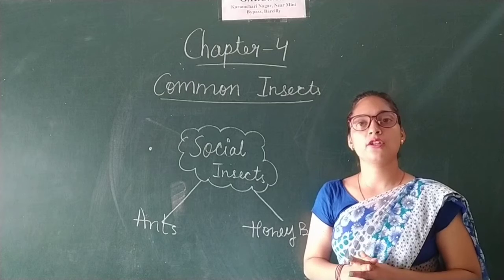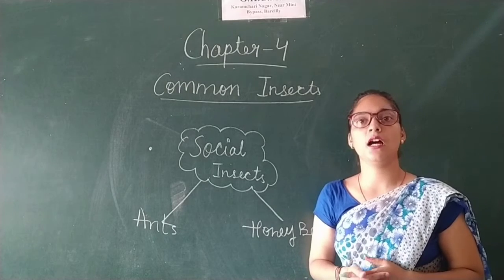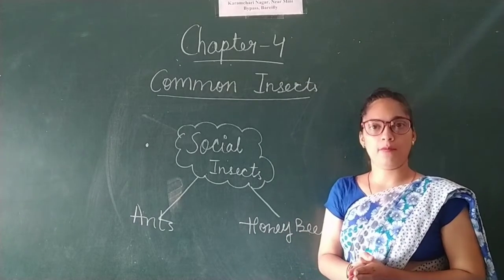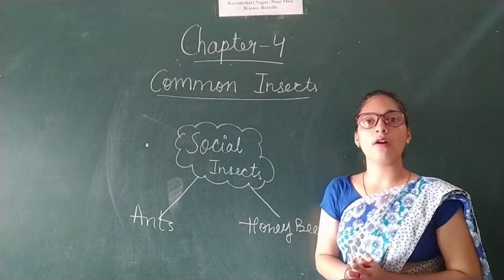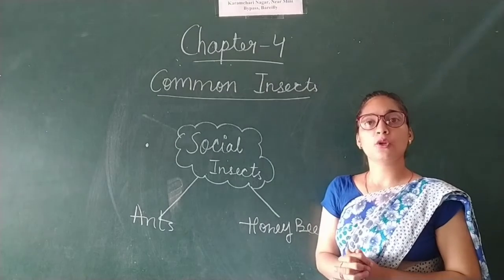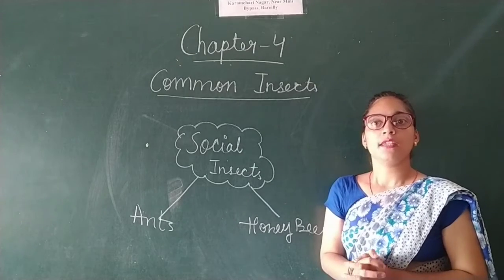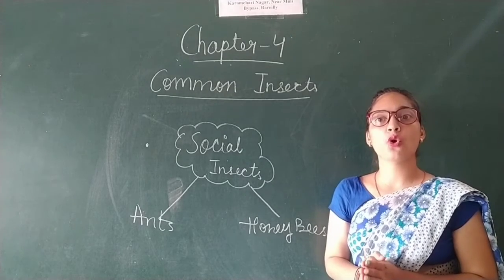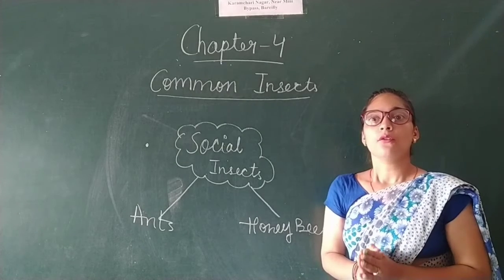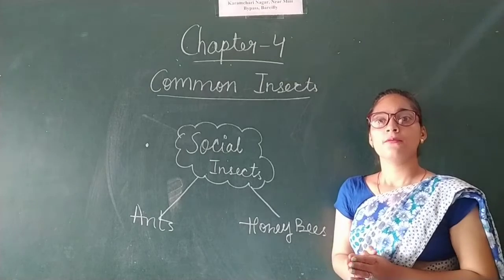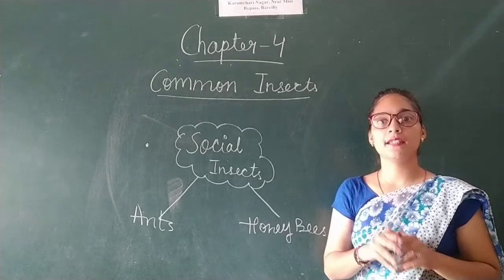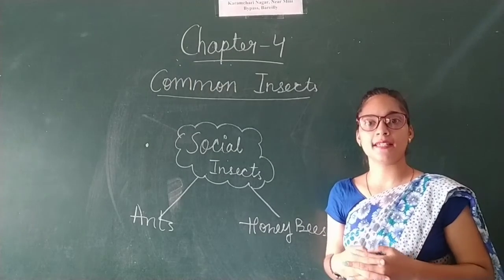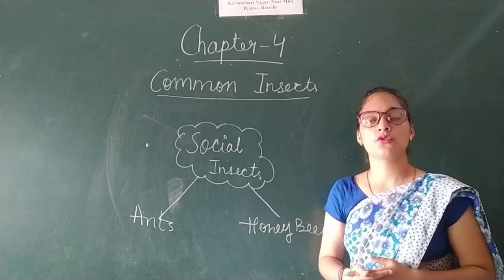Ant colonies also have a queen, female workers, and male ants. Another social insect is the honey bee, which is similar to the ant family. The queen is the most important member of the honey bee family. The queen's main job is to lay eggs. The workers are female and are kept very busy. The male or drone have no function. Worker bees collect nectar and pollen from flowers, and turn this into sweet honey, which is stored in a special cell. So they both are social insects.